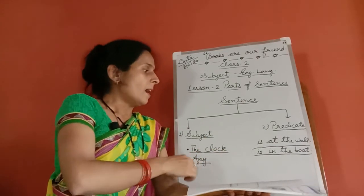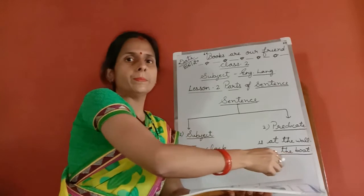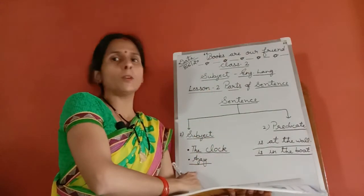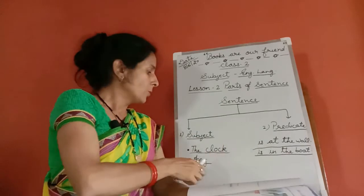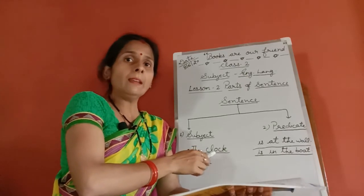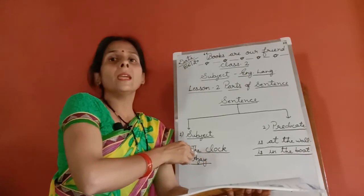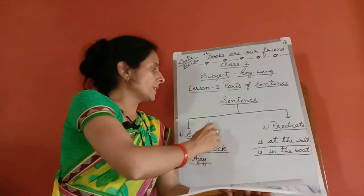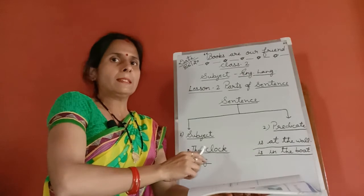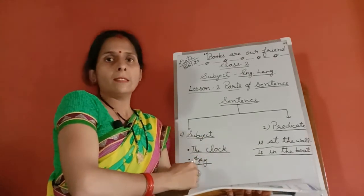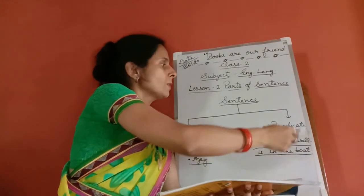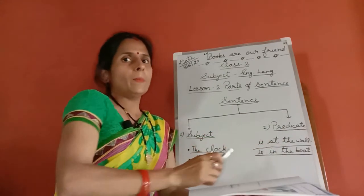The second example: a girl is in the boat. We ask the question: who is in the boat? The answer is 'a girl.' So 'a girl' is the subject. The remaining words — 'is in the boat' — are the predicate. A sentence has two parts: subject and predicate. When we search by asking a question, we find the subject, and the other words form the predicate.